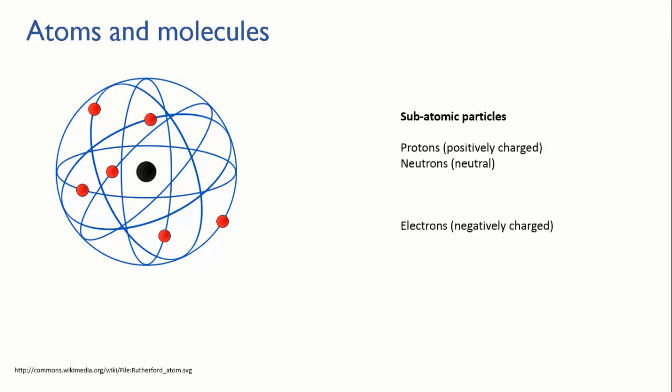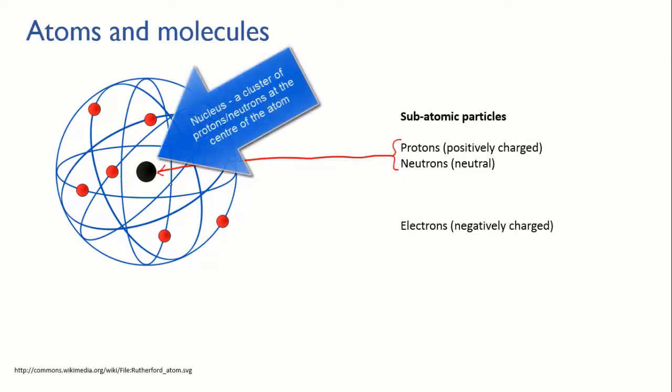Atoms are themselves composed of even tinier particles, which we call subatomic particles. Those are protons, neutrons, and electrons, and they're arranged roughly like this. The protons and neutrons are clumped together in the nucleus, in the center of the atom, and the electrons are whizzing around the outside.